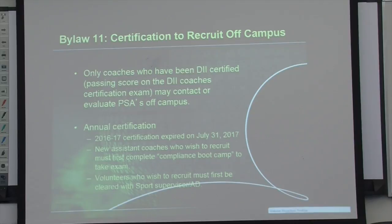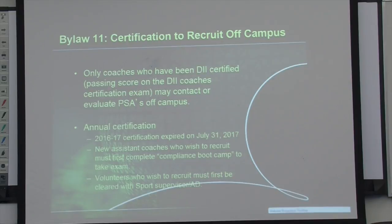Certification to recruit off campus: only coaches who have passed the NCAA recruiting test are certified to recruit off campus. The annual 16-17 recruiting test will expire July 31st, 2017. New assistant coaches who wish to recruit must first complete compliance boot camp — the second half of this presentation. Volunteers who you wish to have involved in recruiting must first be cleared with your sports supervisor and possibly the AED, to ensure they have sufficient rules education.